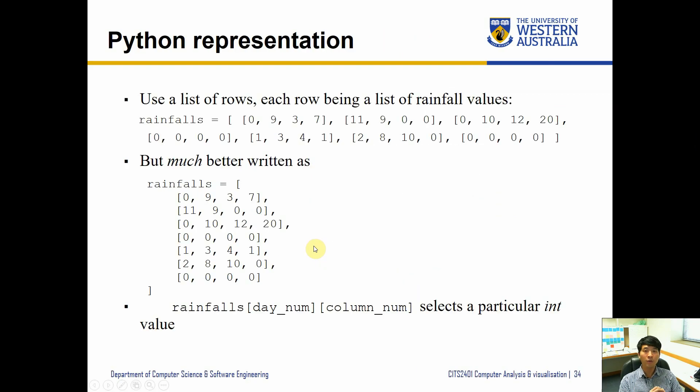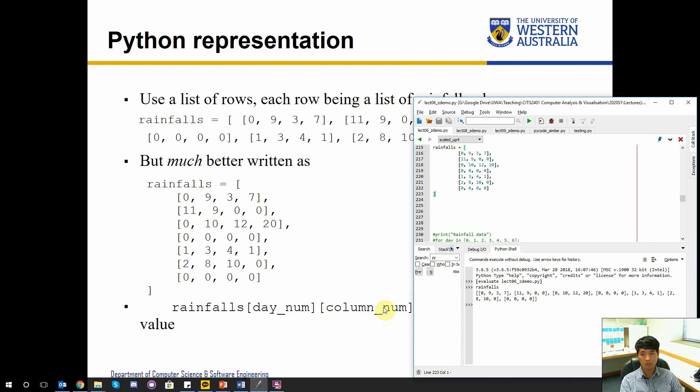And if we want to access certain week or certain day, then we access them the same as how we access lists. By using a square bracket we can specify the location of day, and the next square bracket will be looking at within the list that we have selected for the day, so that's going to be the hourly measurement.